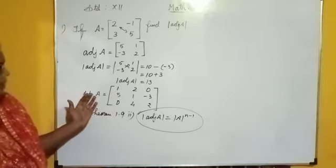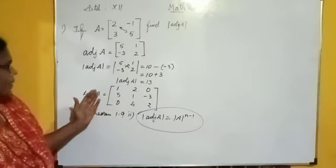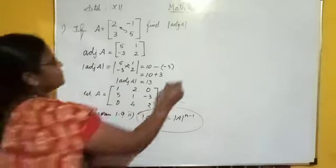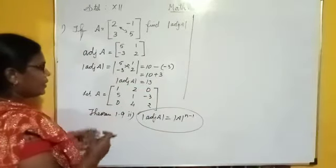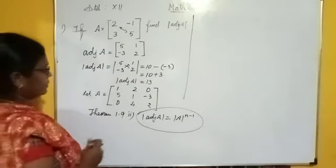Because we can find the determinant value alone. No need to find the adjoint. No need to find the determinant of the adjoint separately.